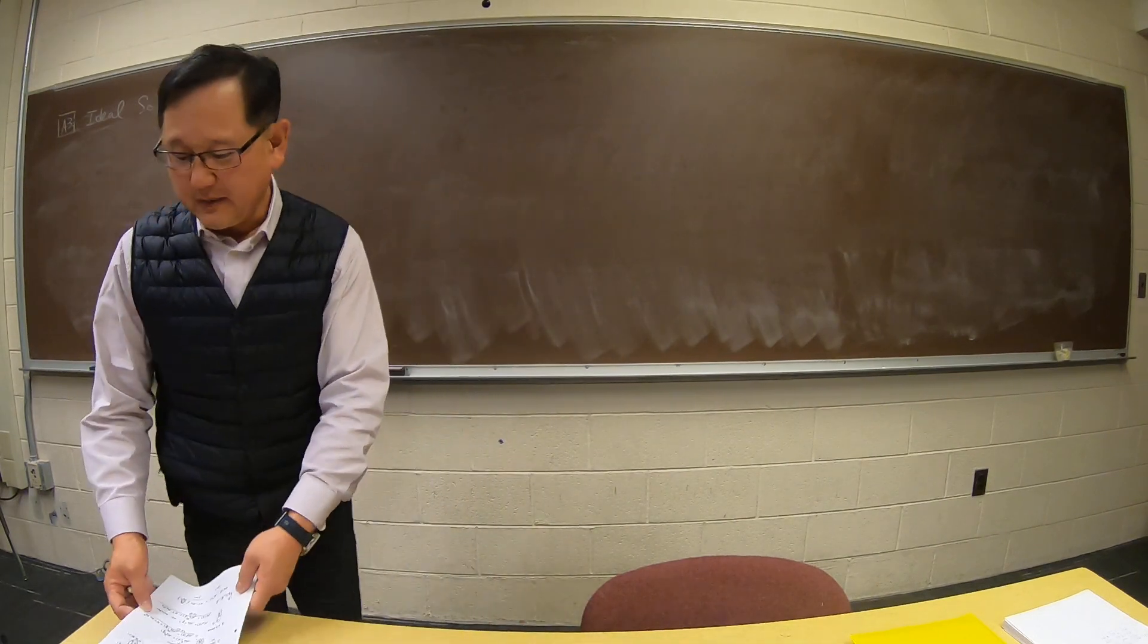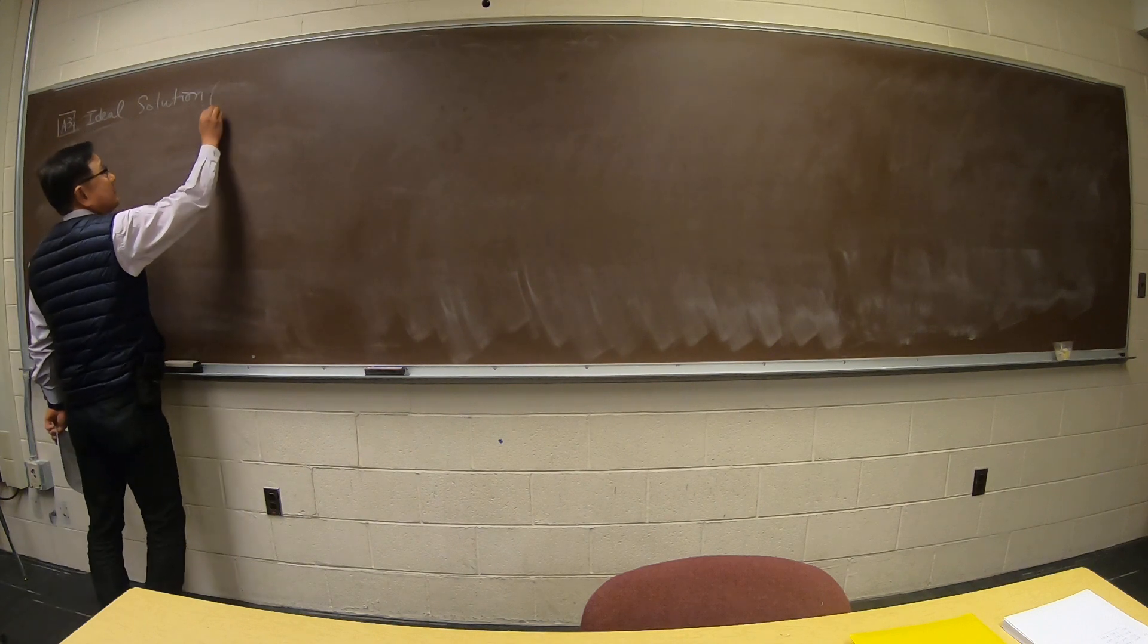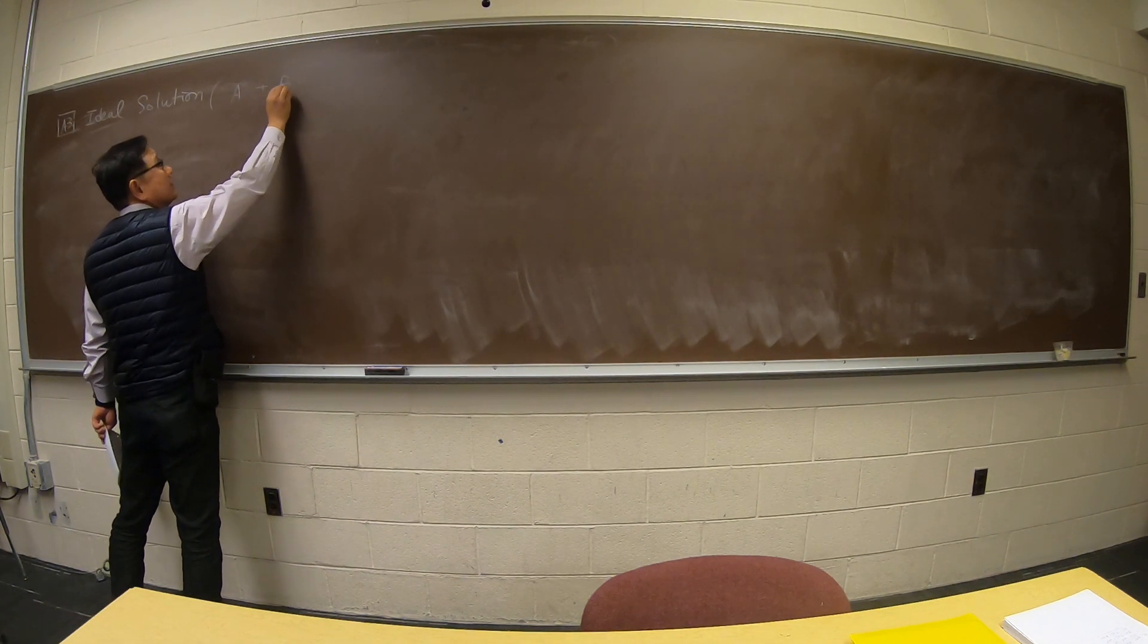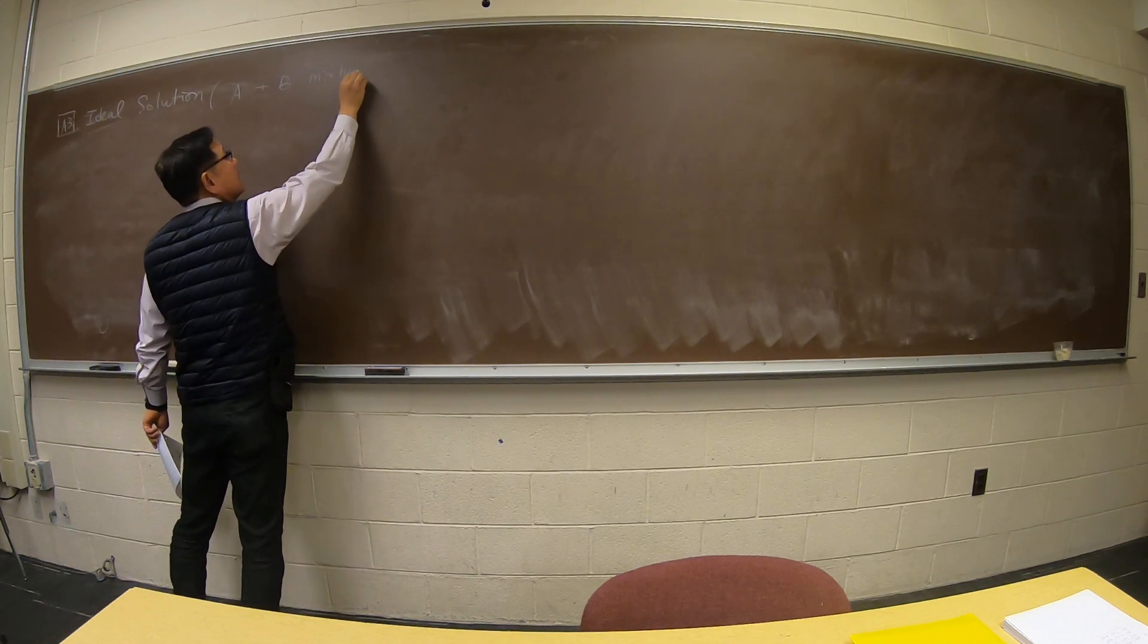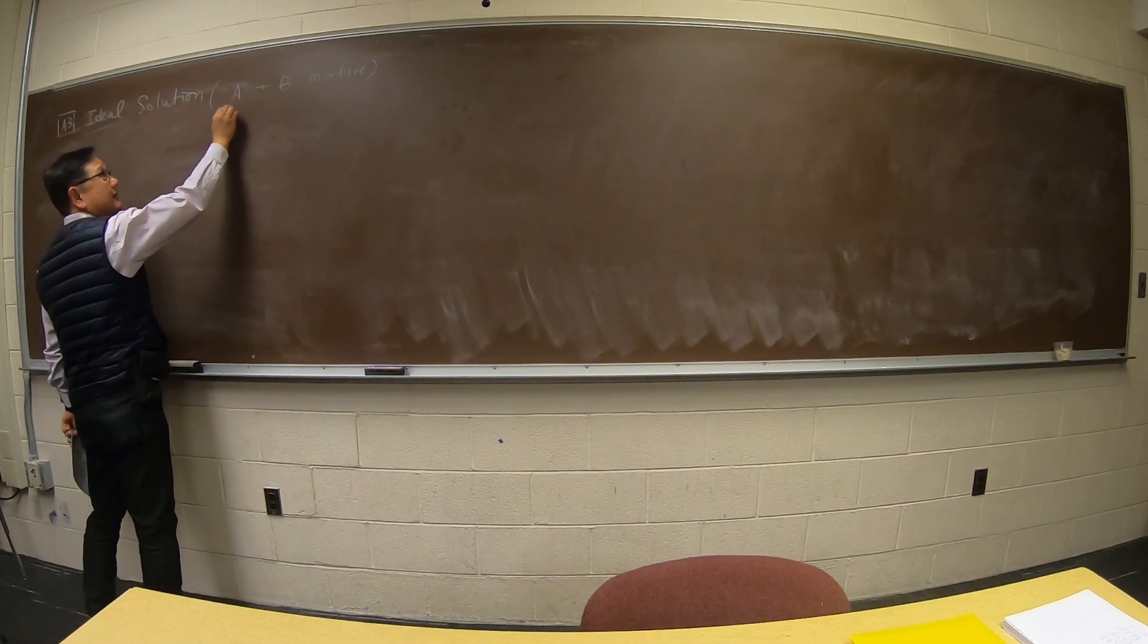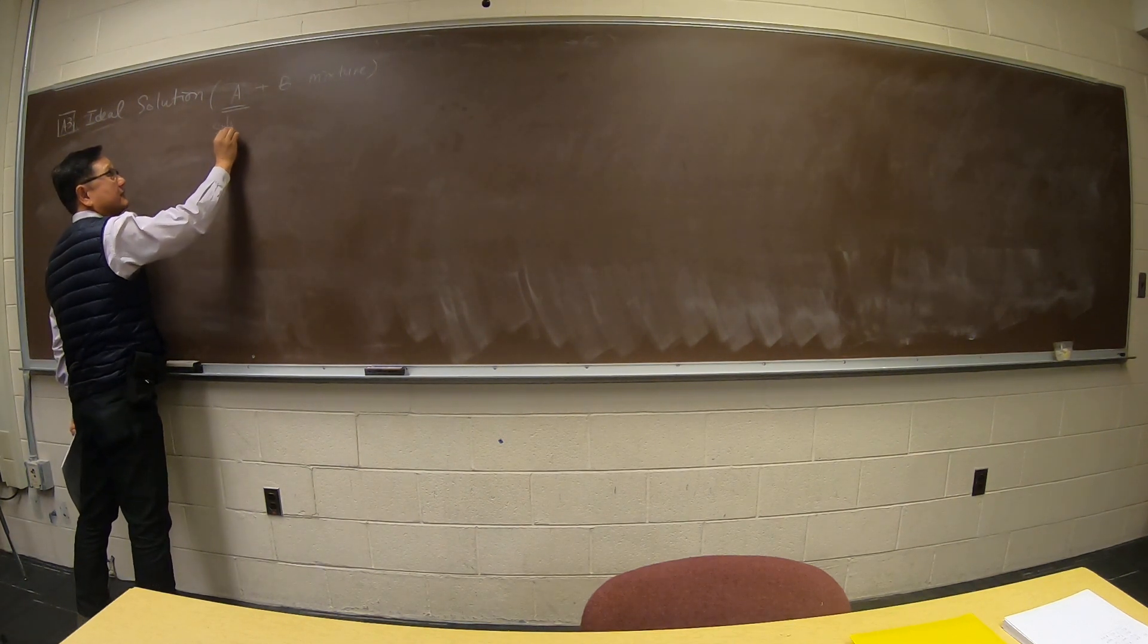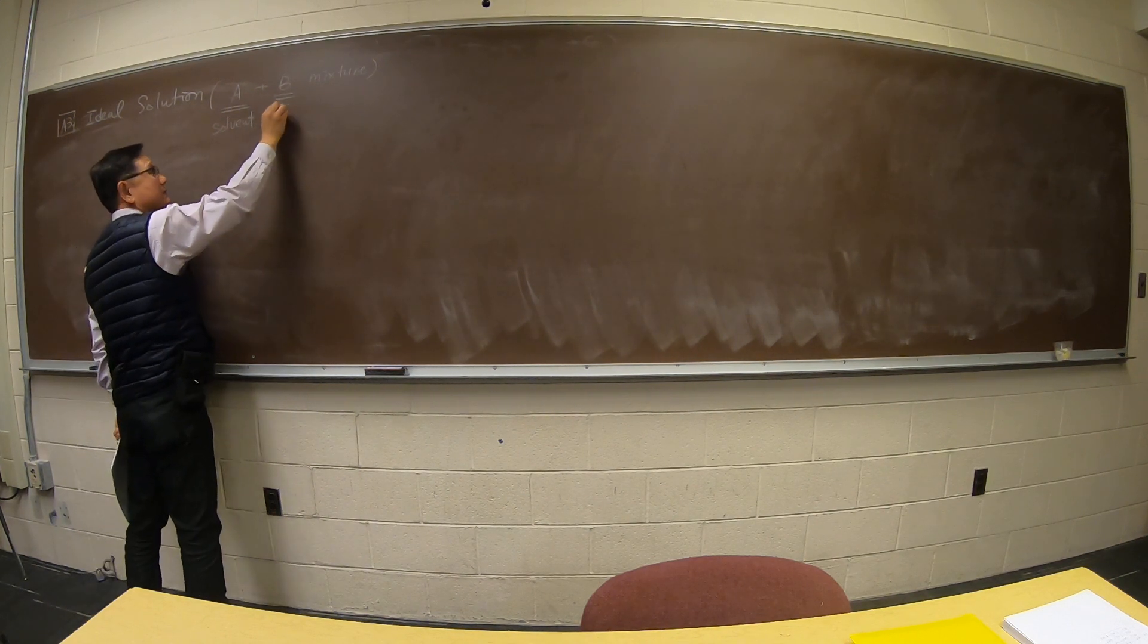I am going to talk to you about the ideal solution. A solution by definition is a mixture of A and B. A is our notation throughout the textbook for the solvent. B is the notation for solute.